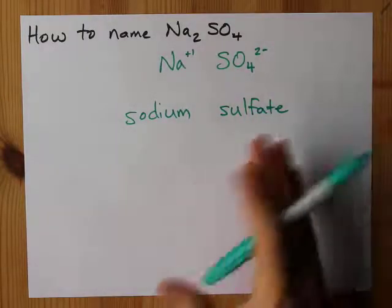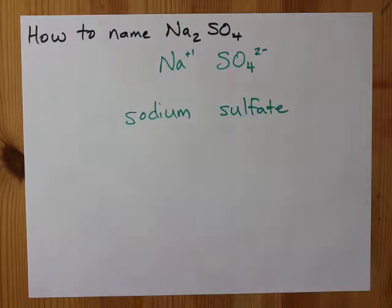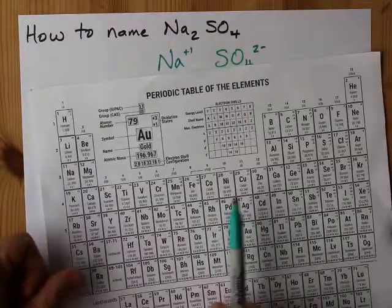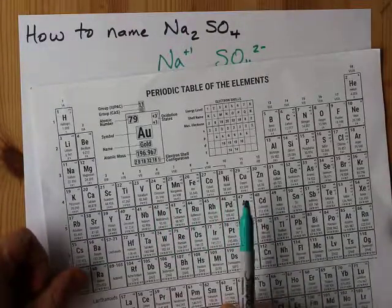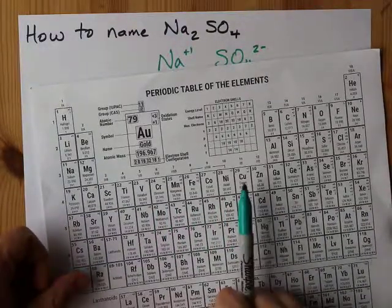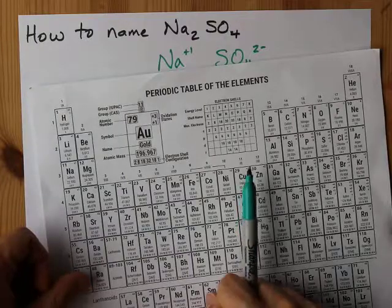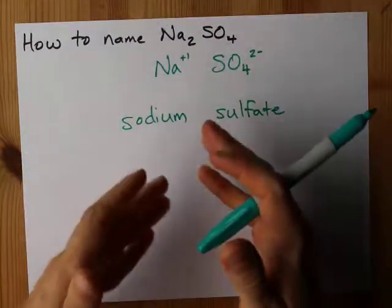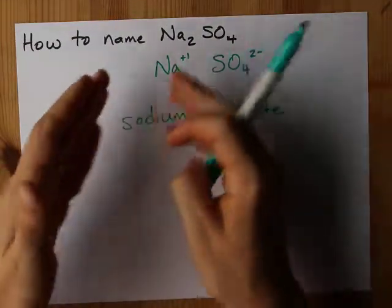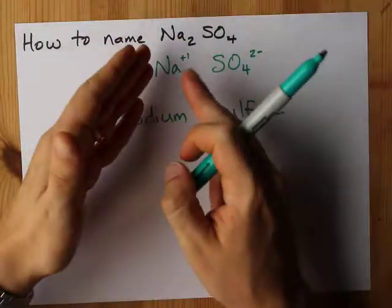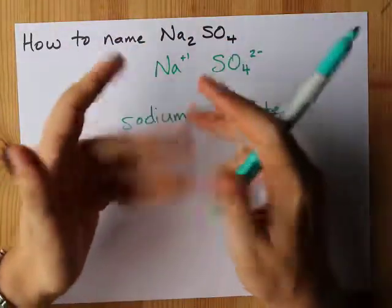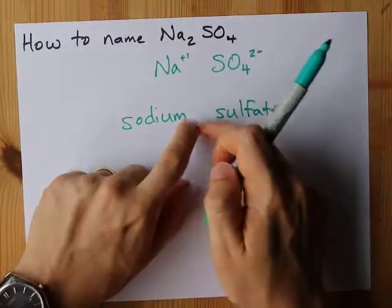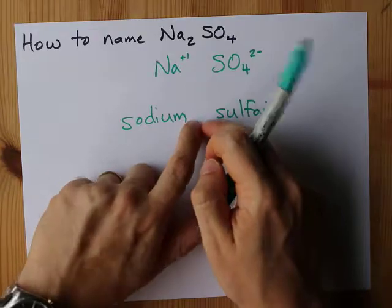The only way this could possibly get more confusing is if they give you a metal that could have more than one possible charge. Copper, for example, could be +1 or +2. If they give you CuSO₄, you're going to have to figure out what the charge on the copper was and put it in Roman numerals.